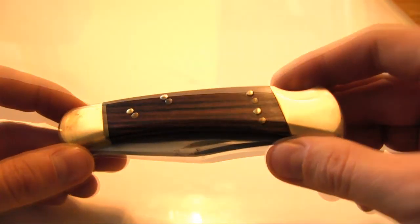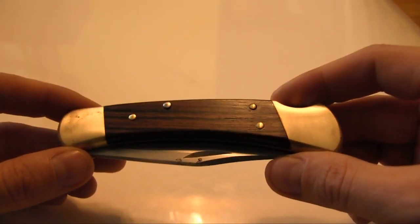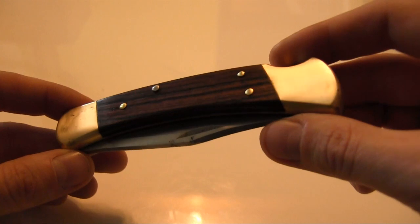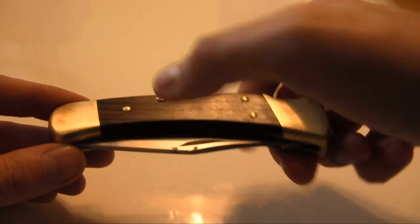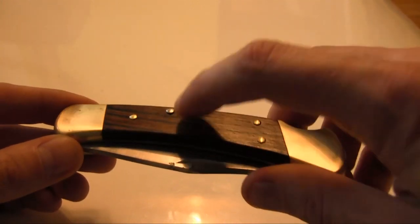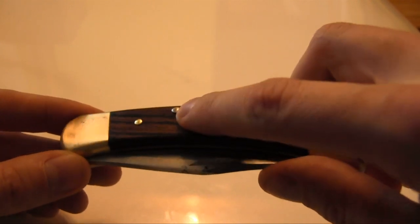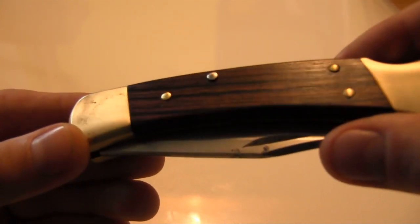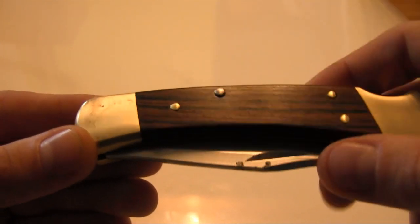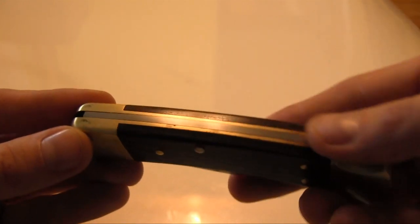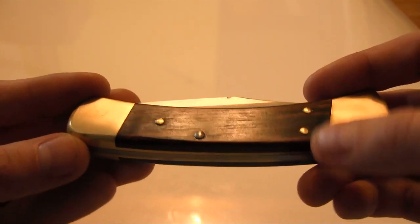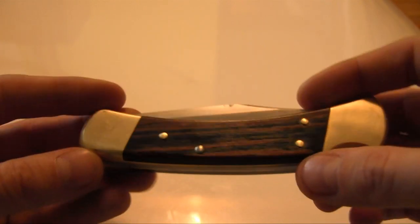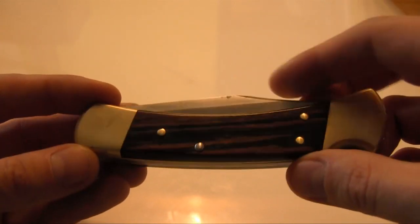The handle material is Macassar Ebony Daimon Wood, secured with brass pins. This pin here, which is stainless steel, is the pivot point of the back spring. All others are pins for the handle.